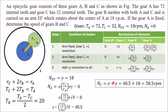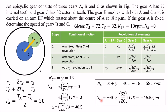Now with Tb equal to 20, the speed of gear B equals minus (Tc/Tb)·X plus Y equals minus (32/20)·40.5 plus 18, giving minus 46.8 RPM. The negative sign means gear B rotates opposite to the arm — if the arm rotates clockwise, gear B rotates anticlockwise at 46.8 RPM.